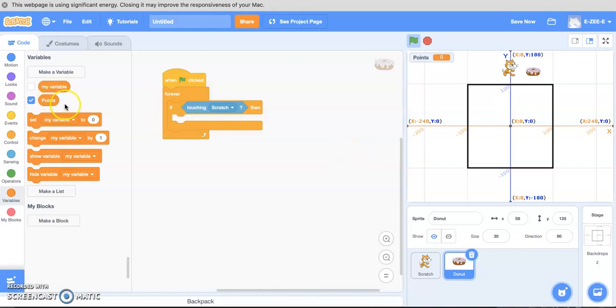So now we have a variable that says points. We've got this little blue check here. It shows up on the screen. If you uncheck it, it disappears. If you check it, it appears up in the corner. So now we have a points variable.